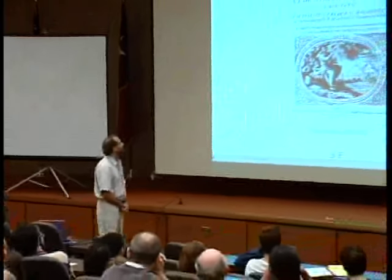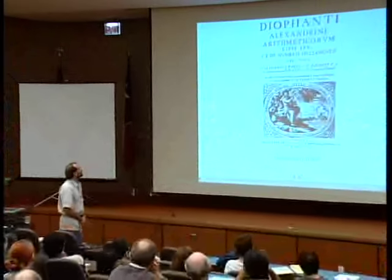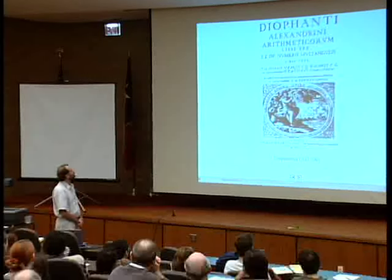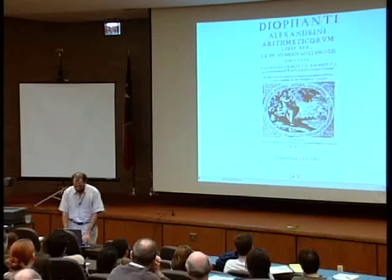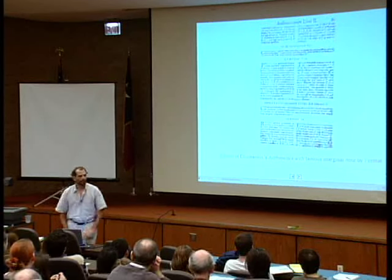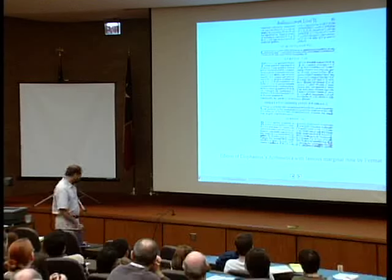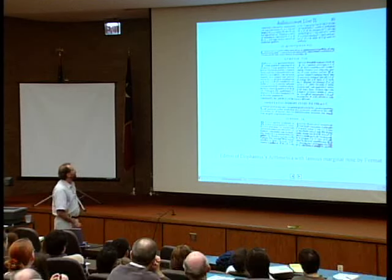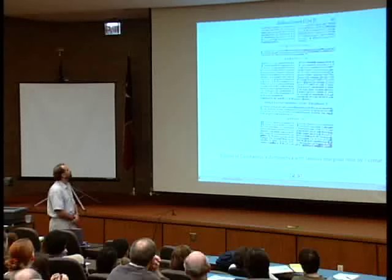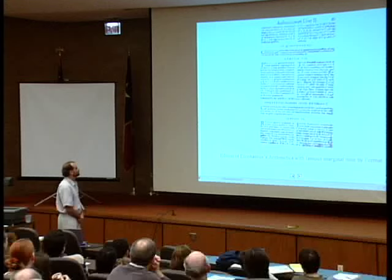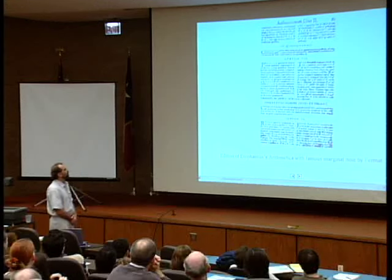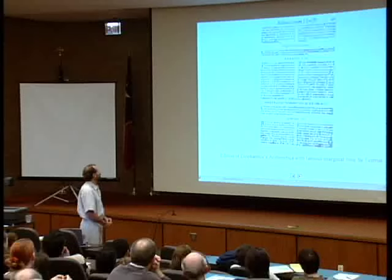Diophantus lived around the year 300 and he wrote a book called Arithmetica. It's all about problems that have to do with equations that we want to solve with integers. And here's the famous page where Fermat made his famous marginal note. It's impossible to talk about Diophantine problems without mentioning Fermat.